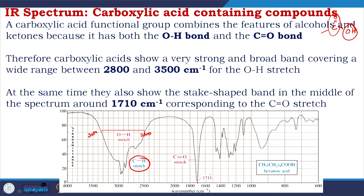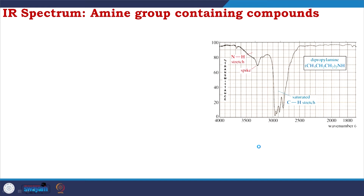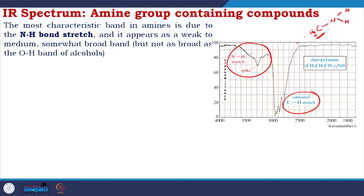The carboxylic acid C=O peak appears at 1711 cm⁻¹, compared to 1720 cm⁻¹ for aldehyde and 1718 cm⁻¹ for ketone. For amine-containing compounds, you get an NH stretch in the 3200–3600 cm⁻¹ region and a saturated CH stretch. The NH stretch appears as a weak to medium somewhat broad band, but not as broad as the hydroxyl group.